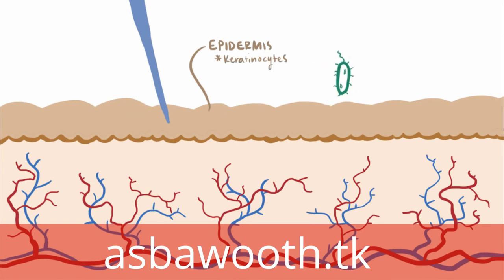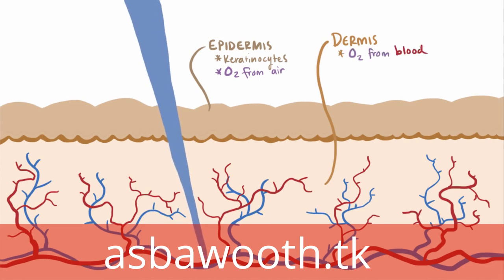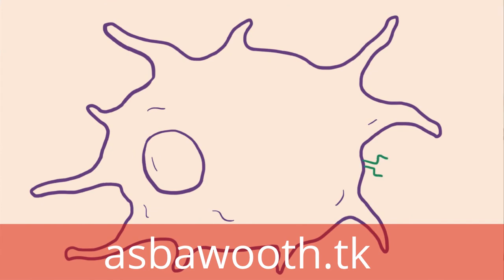Keratinocytes basically serve to protect against foreign pathogens, and they're typically pretty good at that. That proboscis, though, keeps going into the dermis, since the epidermis just gets oxygen from the air and doesn't have its own blood supply, whereas the dermis does — and this is what the mosquito's after: the blood meal. Since the proboscis goes through both the epidermal and dermal layers, the cells in those layers are susceptible to infection by the Zika virus. So in addition to keratinocytes, fibroblasts and dendritic cells have also been found to be permissive to Zika virus, meaning they have some sort of receptor or attachment site that basically says, come on in.